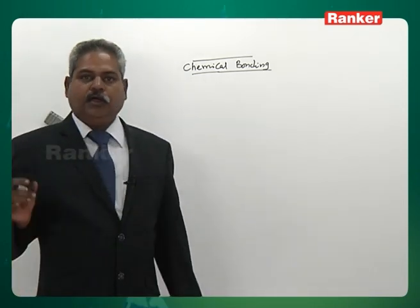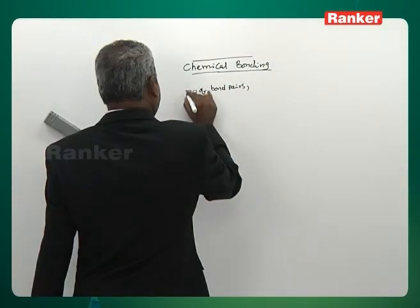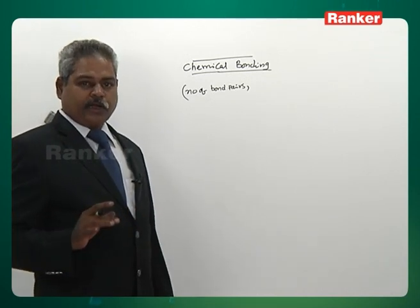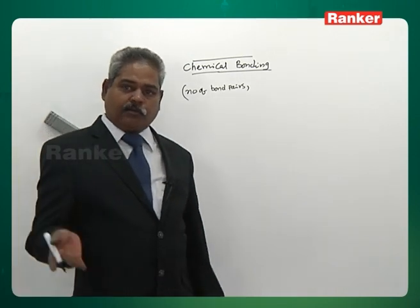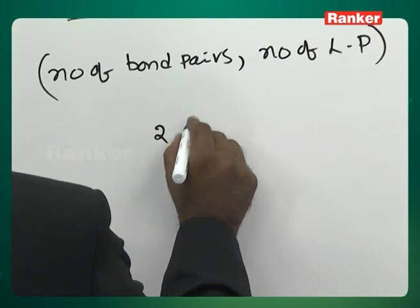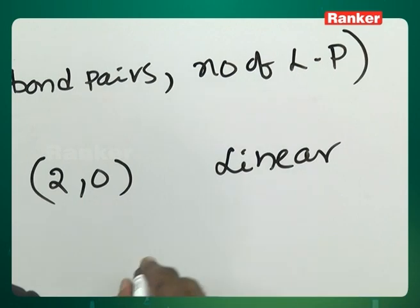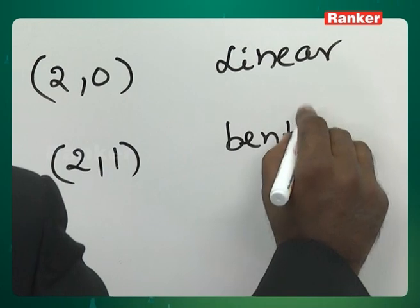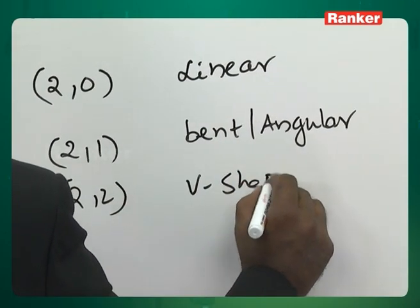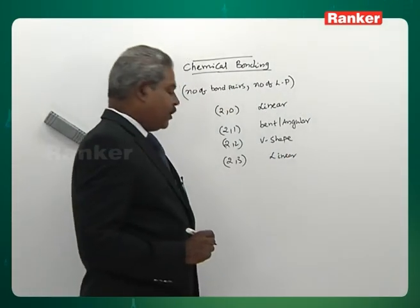The shape of a molecule depends on the number of bonded atoms and the number of lone pairs (not the number of bonds). Two bond pairs, zero lone pairs: linear. Two bond pairs, one lone pair: bent/angular. Two bond pairs, two lone pairs: V-shape. Two bond pairs, three lone pairs: also linear (unexpectedly, because lone pairs occupy equatorial positions).